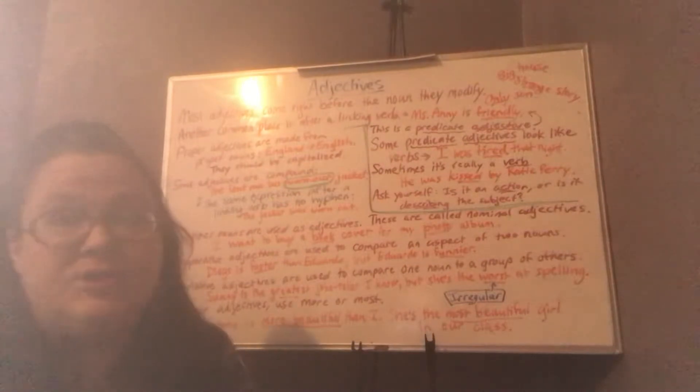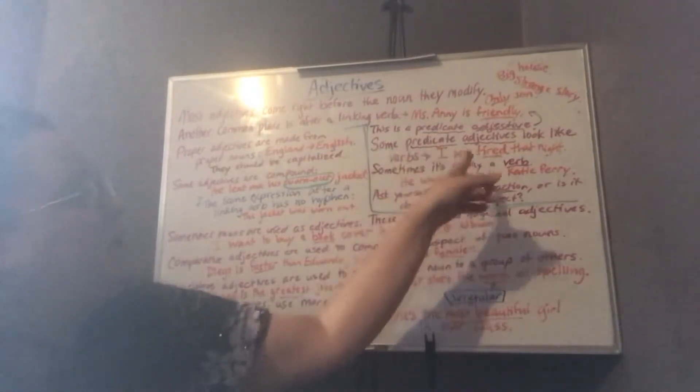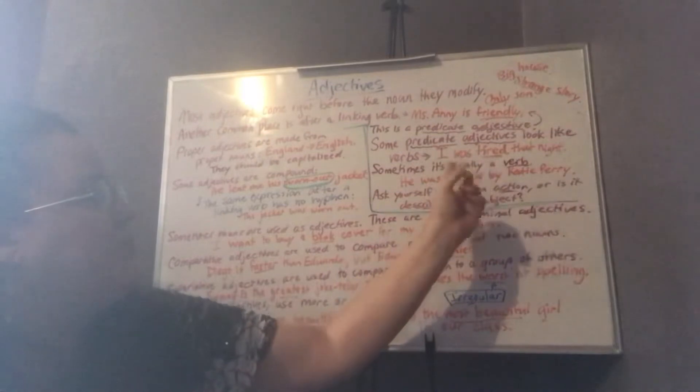So when the adjective is describing the subject but comes after the verb, then it is a predicate adjective like this one. Some predicate adjectives look like verbs. For example, this one.